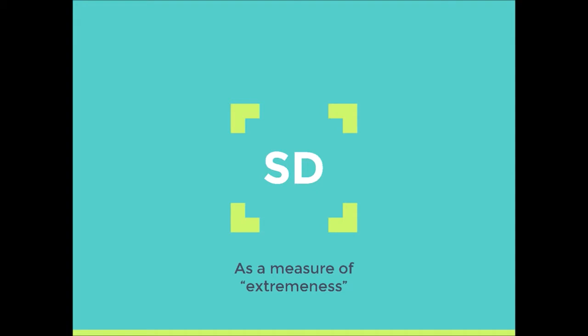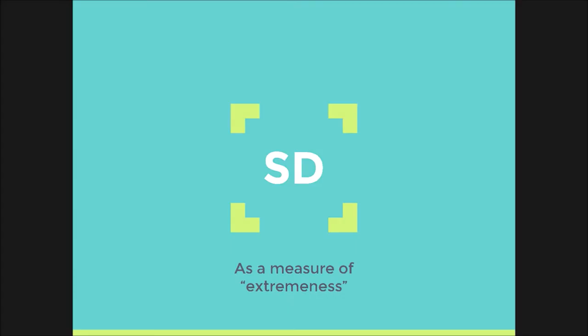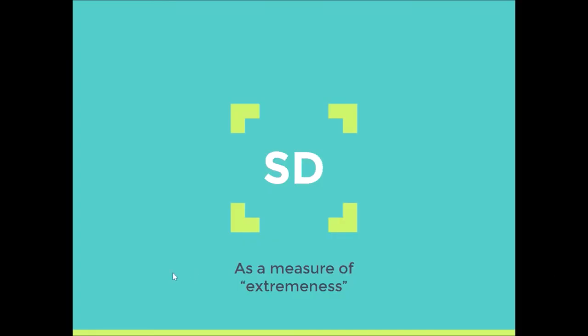We'll learn more about standard deviation when we talk about normal distributions. We'll use standard deviations a lot. Every normal distribution can be characterized simply by two things: it's normally distributed with some mean—population mu—and some standard deviation sigma. So if you know the mean and standard deviation, you've completely described a normal distribution.